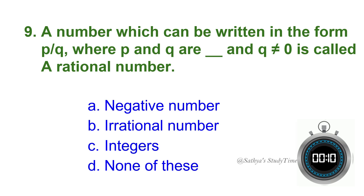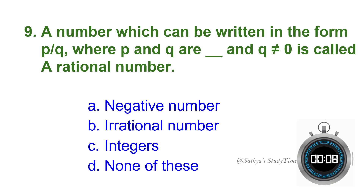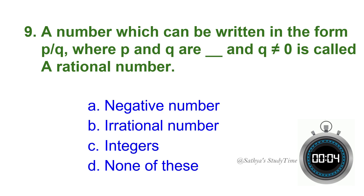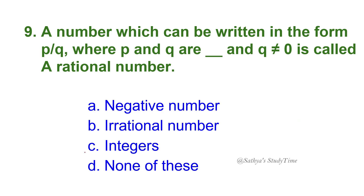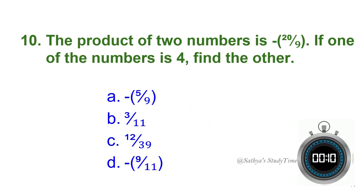Ninth question: A number which can be written in the form p/q, where p and q are blank and q ≠ 0, is called a rational number. Your time starts now. The answer is: integers — p and q are integers.